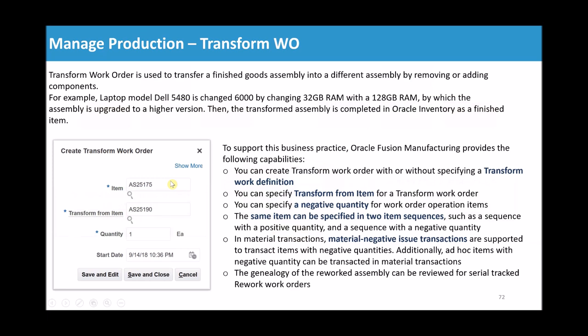This is the way Transform Work Order works. In R12 we didn't have this concept, so the best workaround was to create a non-standard work order, but the problem was you couldn't complete it properly — or even if you did, it wasn't best practice. We used to manually add positive and negative quantities in the BOM and then process transactions. In Oracle Cloud, there is this new feature called Transform Work Orders where you specify the finished product — MI_SA_002 — the transform-from item MI_SA_001, and how many quantities you want to make.